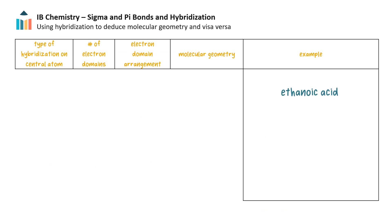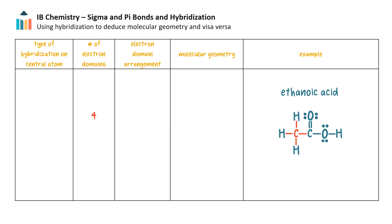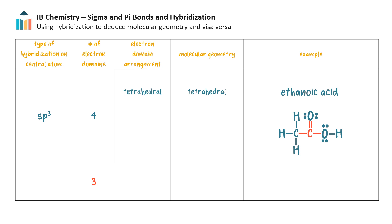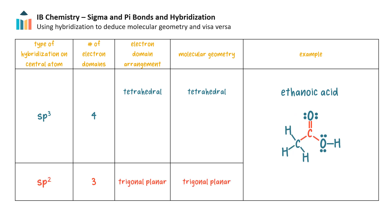Here is a more challenging example. What is the hybridization and molecular geometry around each atom of the backbone in ethanoic acid? First, we need to draw the Lewis structure. These are carbons 1 and 2 according to our IUPAC nomenclature, but let's start with the leftmost carbon. Carbon 2 has four equivalent electron domains, so it must be sp3 hybridized with a tetrahedral geometry. Carbon 1 has three bonding electron domains, so it is sp2 hybridized with a trigonal planar geometry.